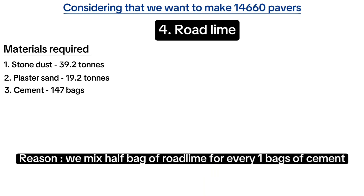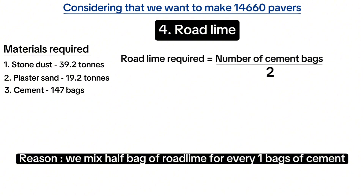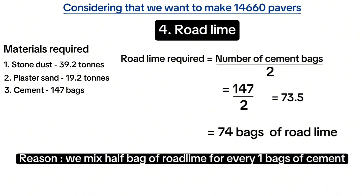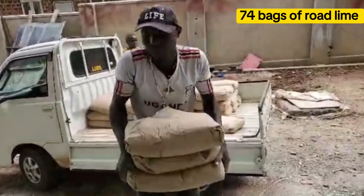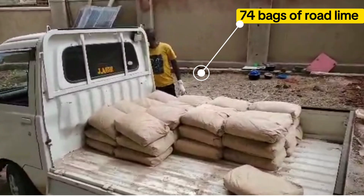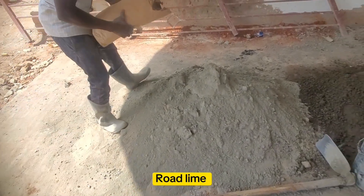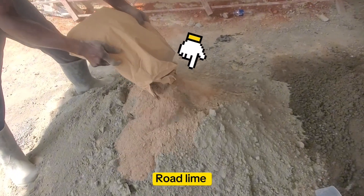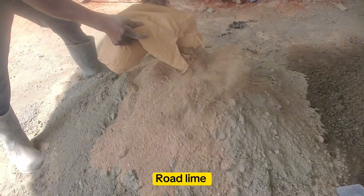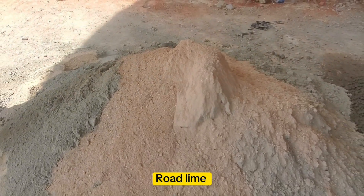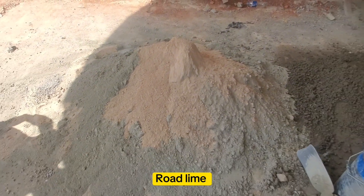The fourth material is road lime. The number of bags of road lime required equals cement bags divided by two, which is 147 divided by 2 to get 73.5, equivalent to 74 bags of road lime — and that's the exact number we bought. Road lime looks like this; don't buy the white one, buy this exact one with this color. Each bag of road lime is 7 kilograms. Road lime helps to harden the paver blocks, and that's why we mix half a bag of road lime for every one bag of cement.